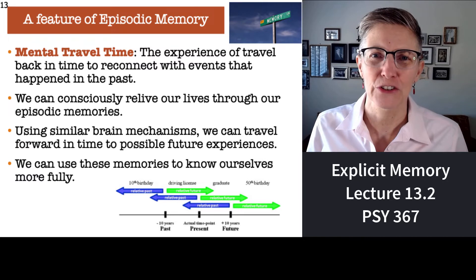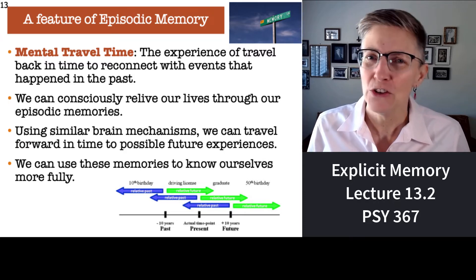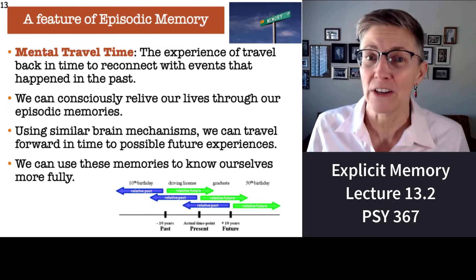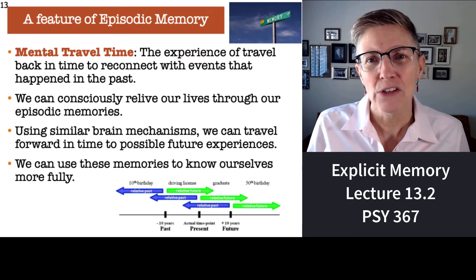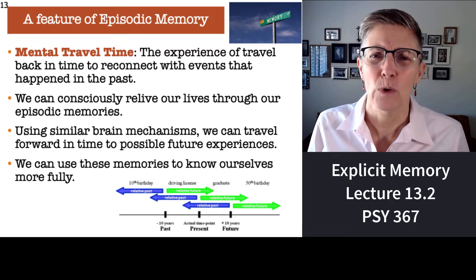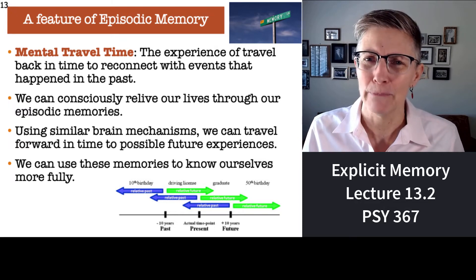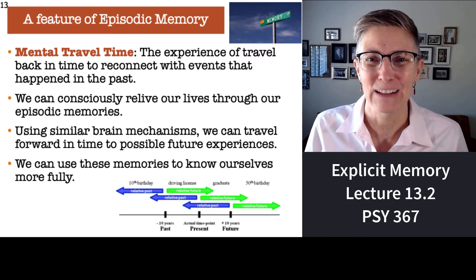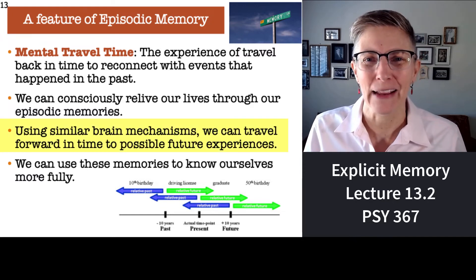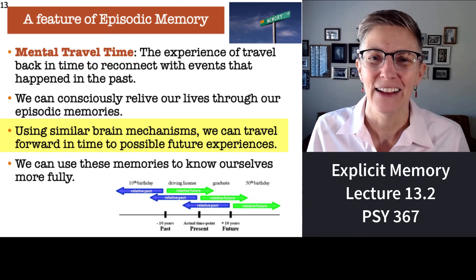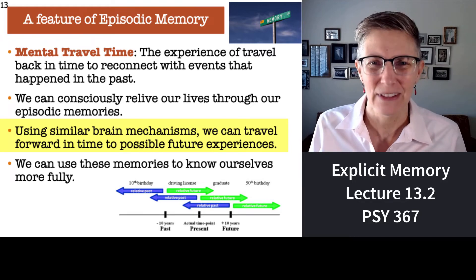One of the really interesting characteristics of episodic memory is that it allows you to time travel. You can travel back in time and think about graduating from high school, your first date, learning how to drive. But you can also time travel into the future — what will it be like to have kids, what kind of career will I have, what might my retirement look like? It turns out the same brain mechanisms you use to look back in time at your life overlap with the mechanisms you use to look forward into the future. Time travel is a really cool aspect of episodic memory.